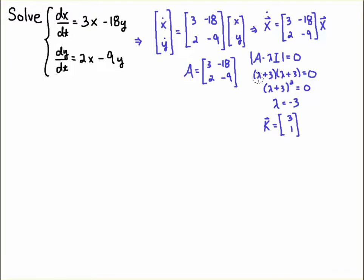When I go about finding the eigenvalues, I see that I get a repeated eigenvalue: minus 3, minus 3. So, lambda equals minus 3 is the eigenvalue. And the corresponding eigenvector is 3, 1. I'm assuming that you know how to do that.